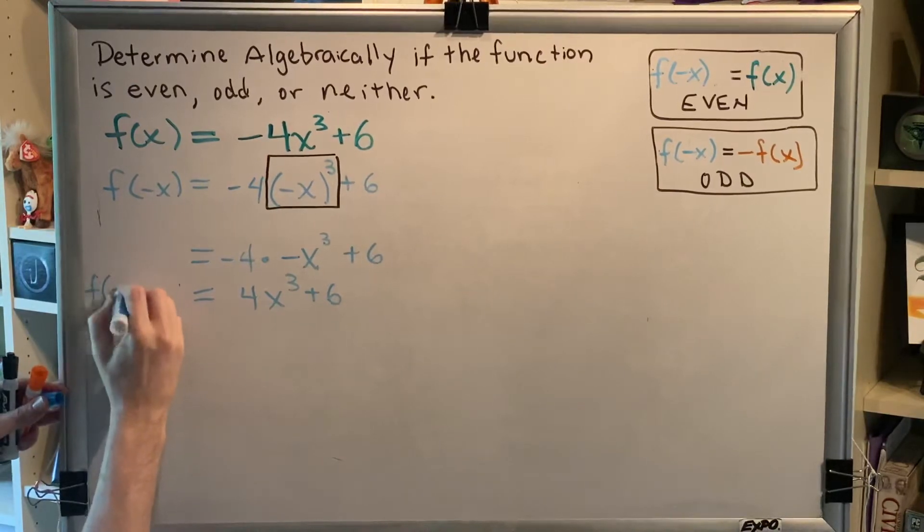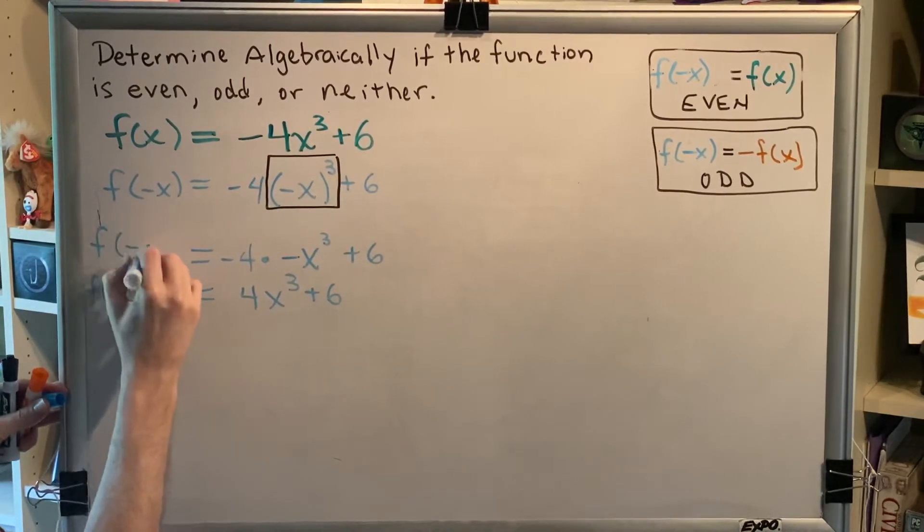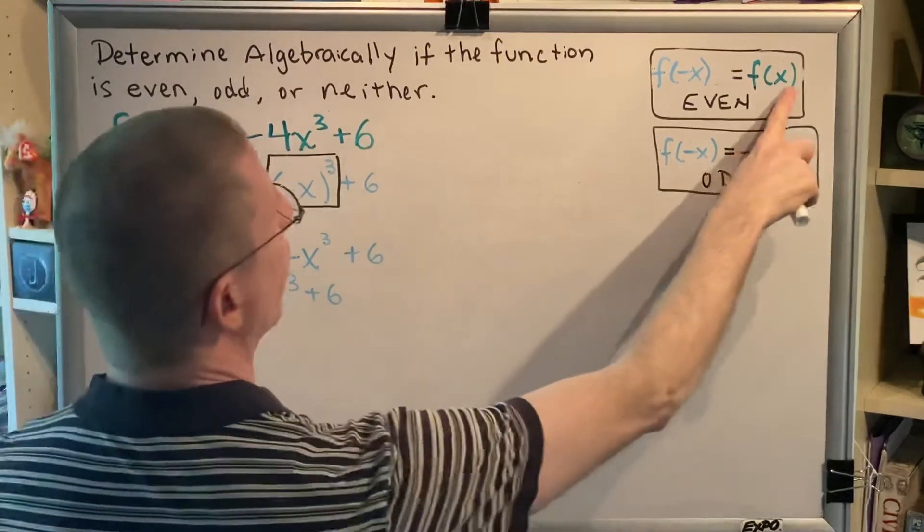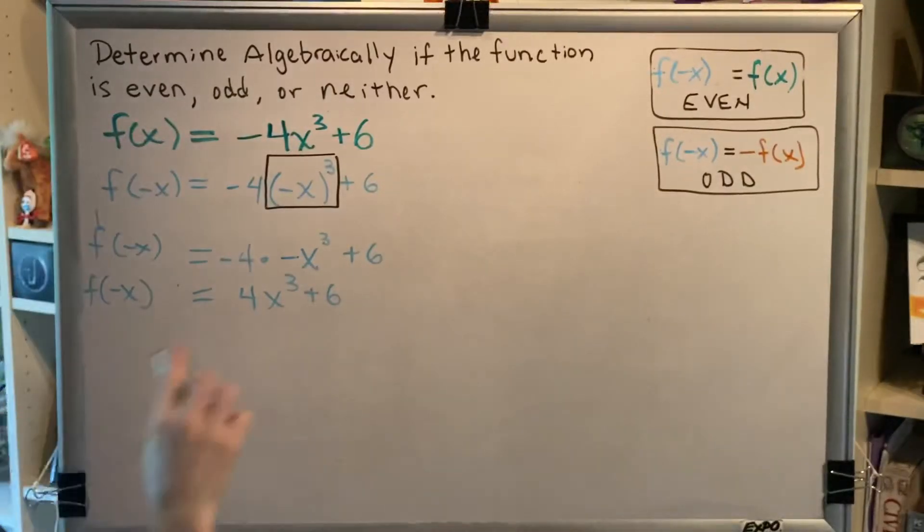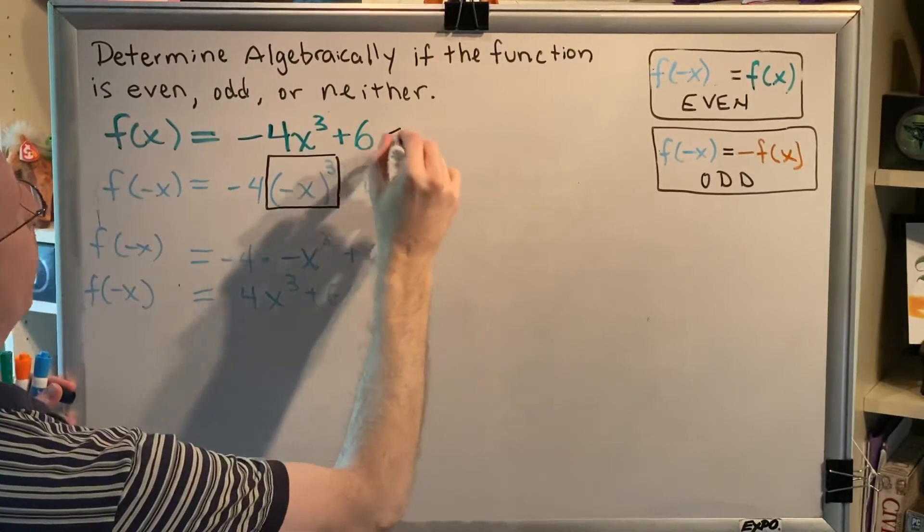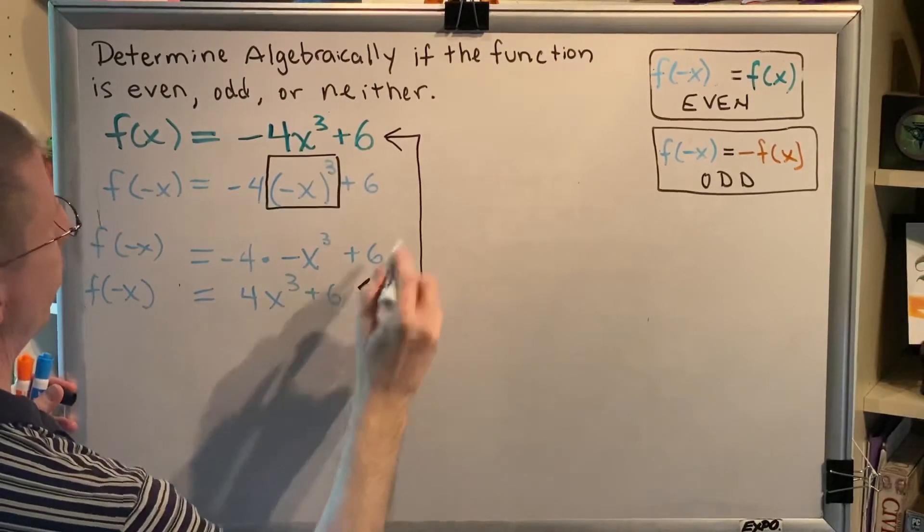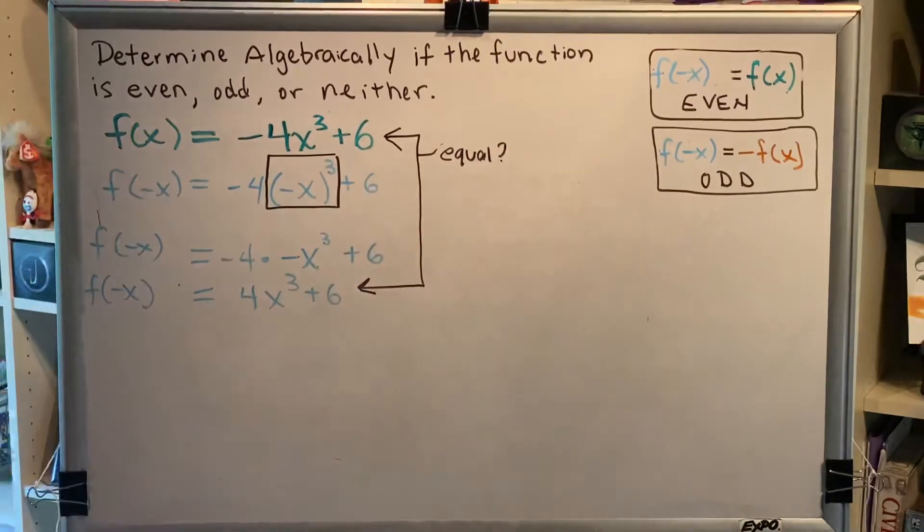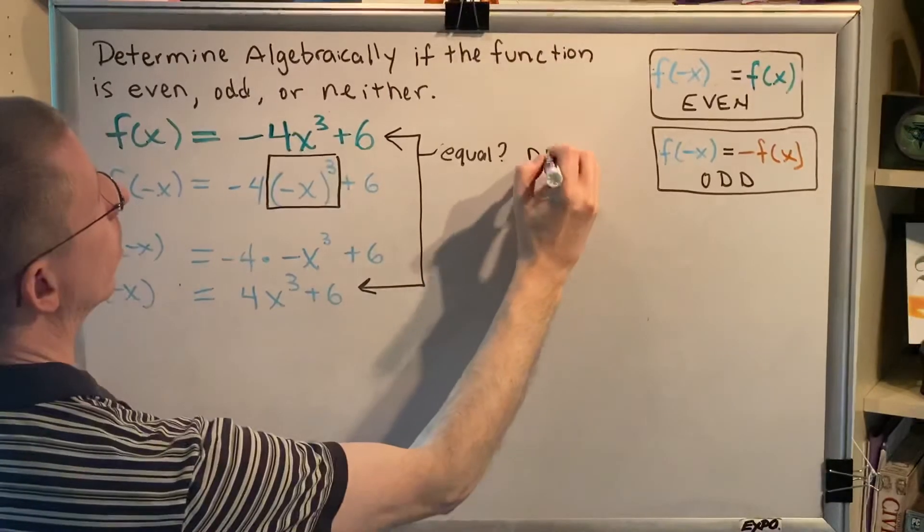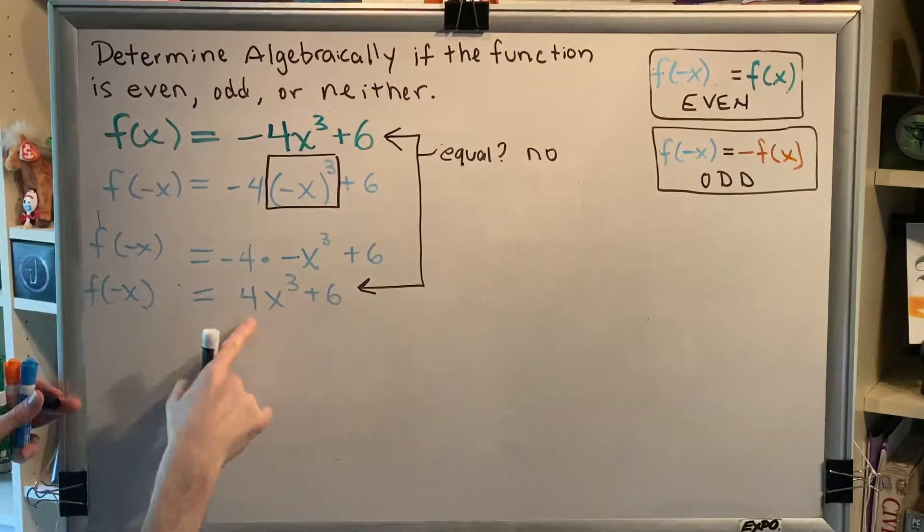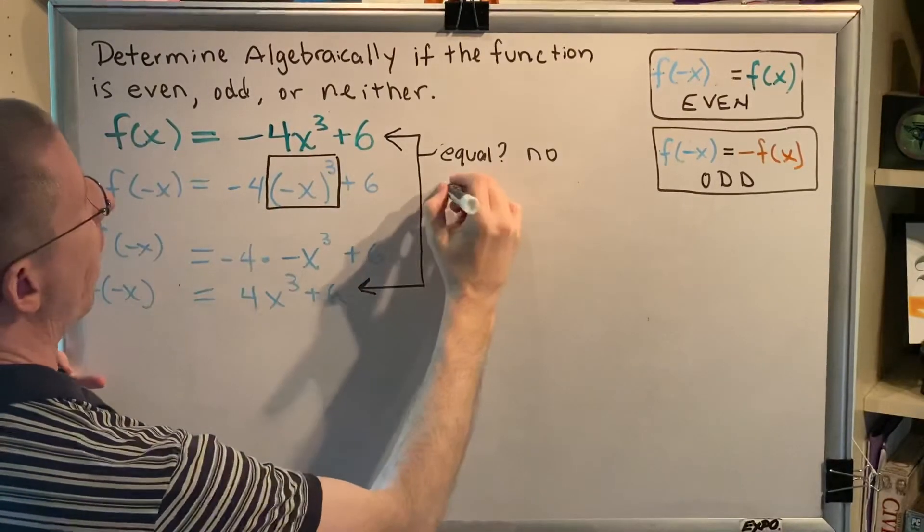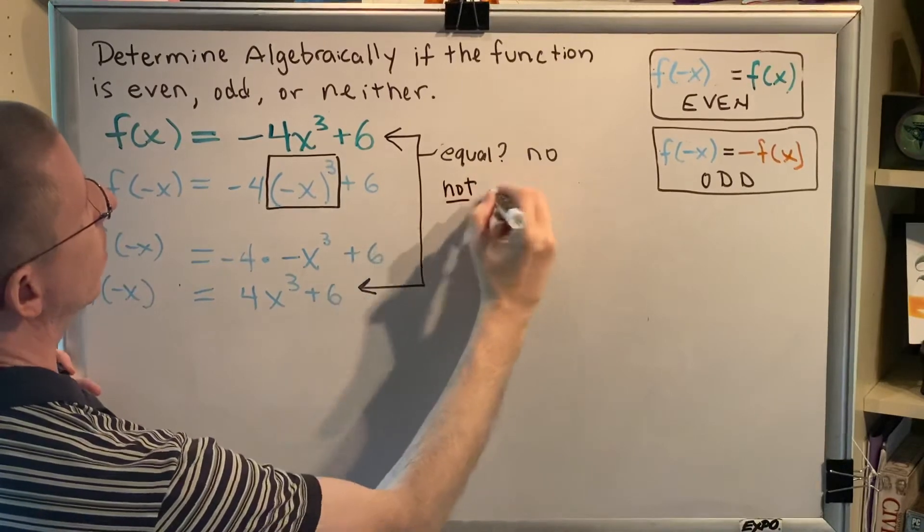We've now found f of negative x, and we're ready for our first comparison. We want to know, is f of x equal to f of negative x? Is this up here equal to this down here? And the answer is no. This is negative 4x cubed, this is positive 4x cubed, they are different. Therefore, the function f of x is not even.